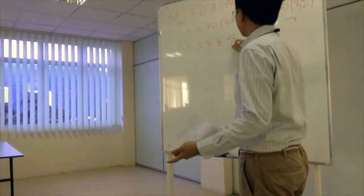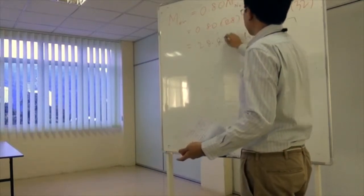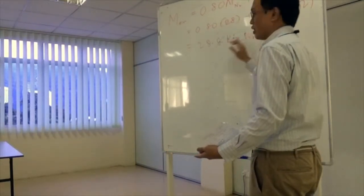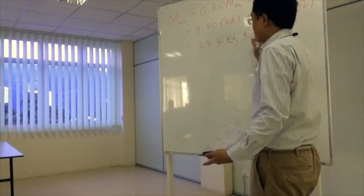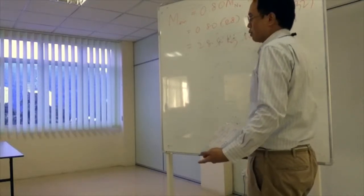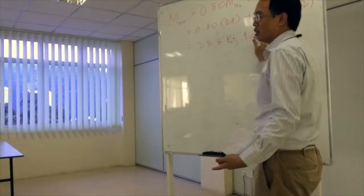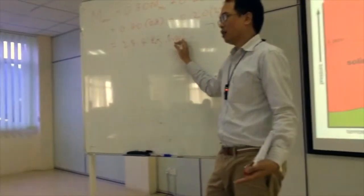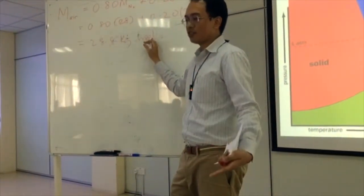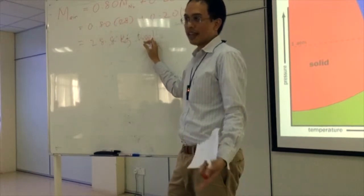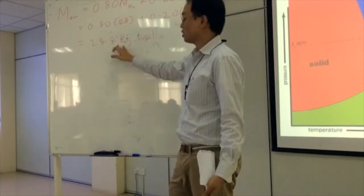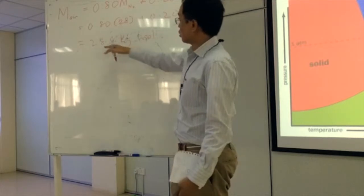So can we calculate the average molecular weight of air? Remember, air is a composition of gases, right? And we're using the two main components to calculate the average molecular of air. You know the molecular weight of nitrogen gas? 28. Nitrogen is 14, so 14 plus 14 is 28. Oxygen is 16 times 2, which gives you 32.